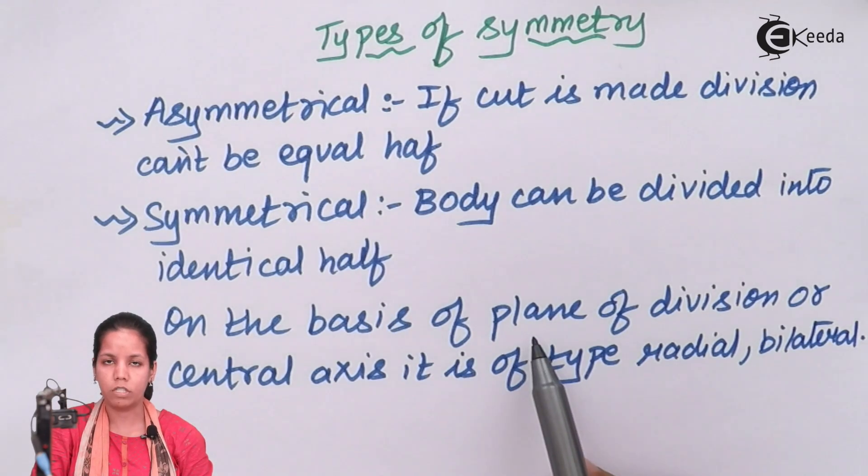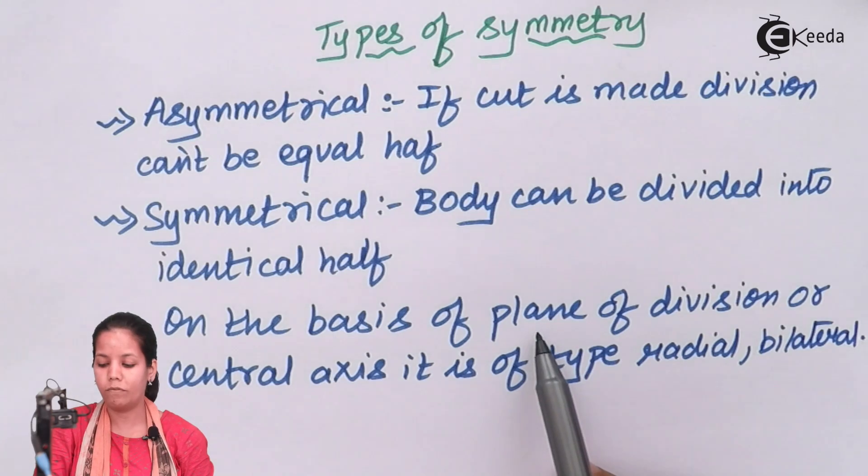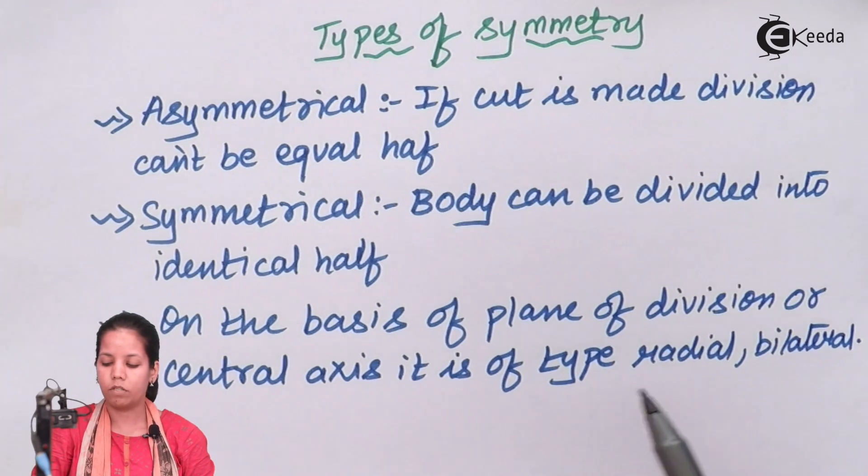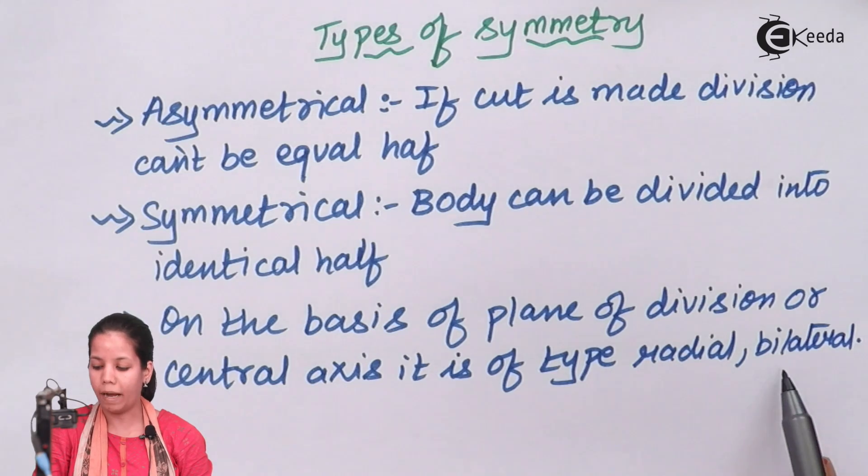Now on the basis of plane of division, or the central axis, there are two types of symmetry: radial symmetry and bilateral symmetry.